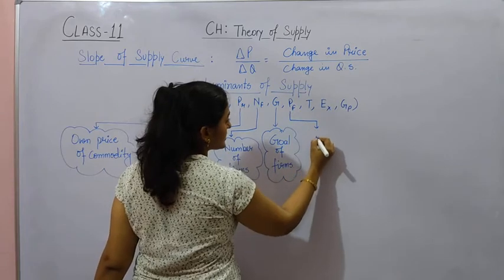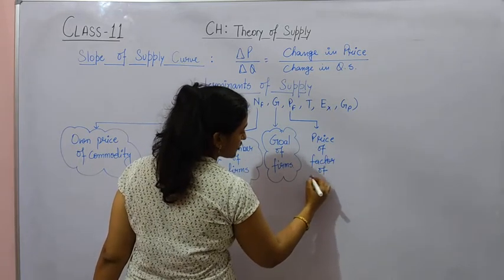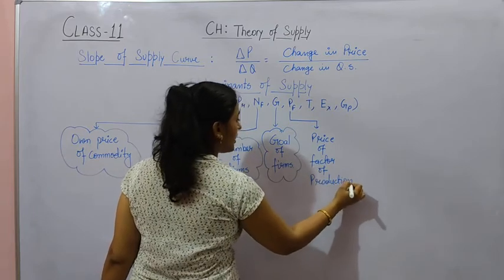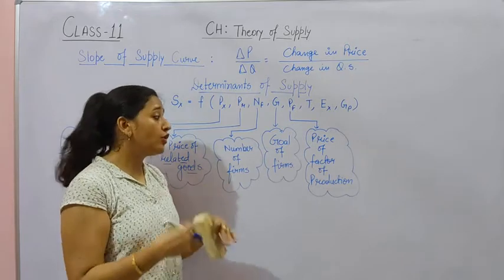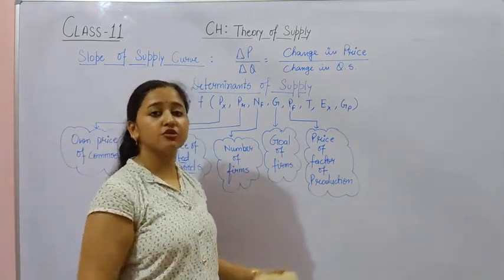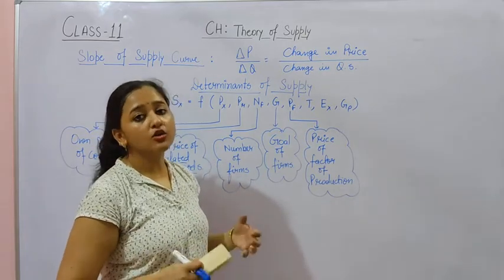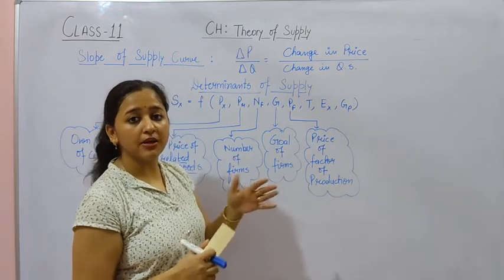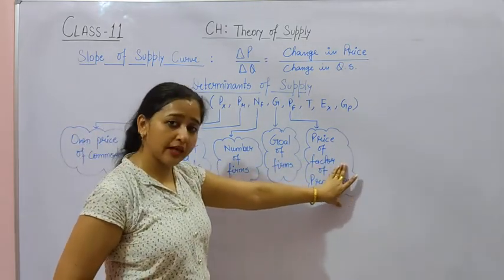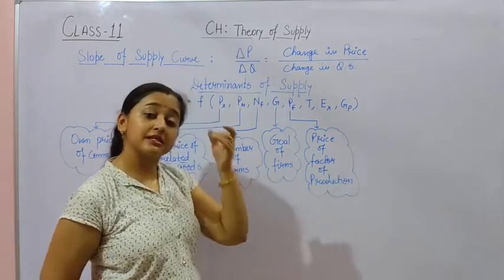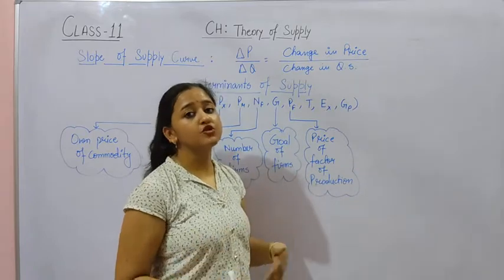Next, PF represents the price of factors of production — that is, factor payments such as wages, salaries, and insurance. If prices of factors of production increase, the cost of production will be higher, and supply will decrease. Conversely, if factor prices are low — for example, cheap labor is available — then cost of production decreases, and the producer will supply more.